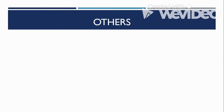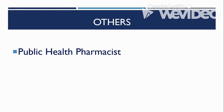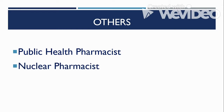Some other specializations include public health pharmacists, who provide education regarding policy, patient education, and population management — common examples being pharmacists working in the Department of Health. Their main focus is on improving the health of the population through the right use of medicines and pharmacy services. We also have nuclear pharmacists, who are involved in the preparation of radioactive materials for patient administration used to diagnose and treat specific diseases in nuclear medicine. They also order, receive, and control inventory of radioactive drugs.